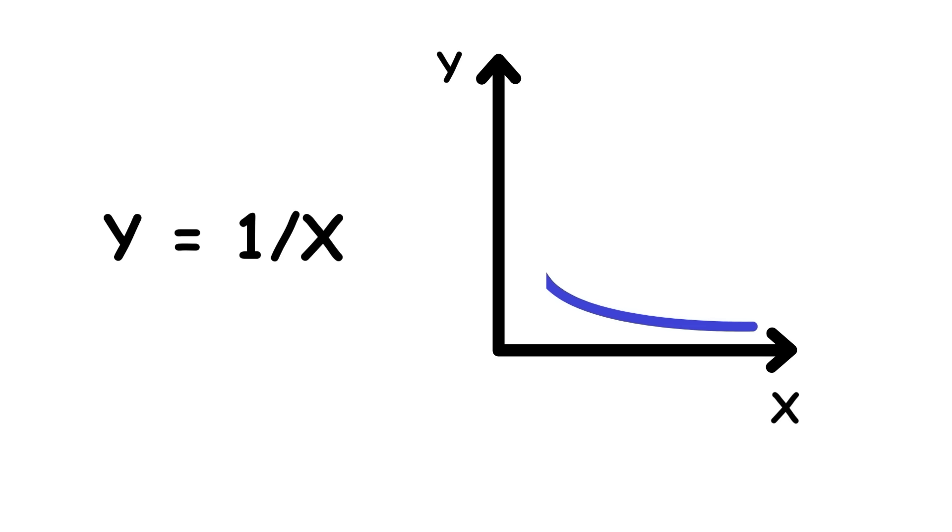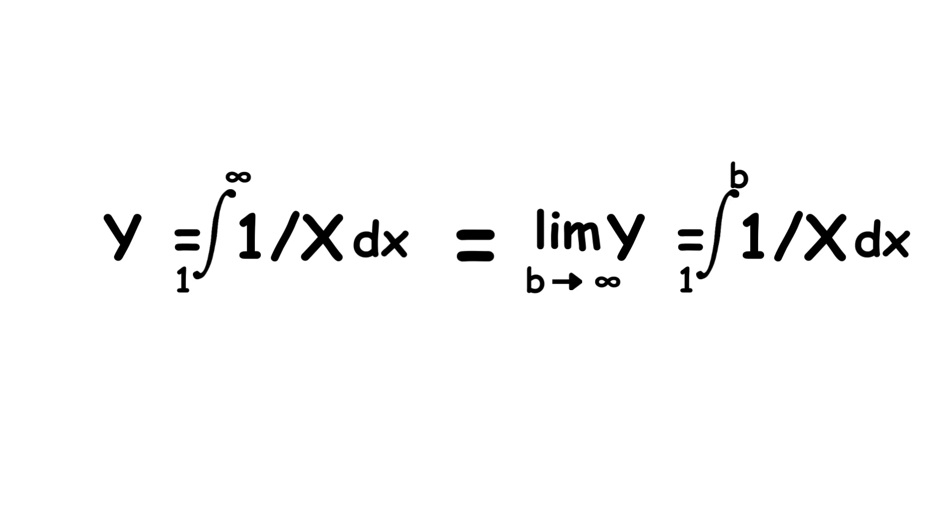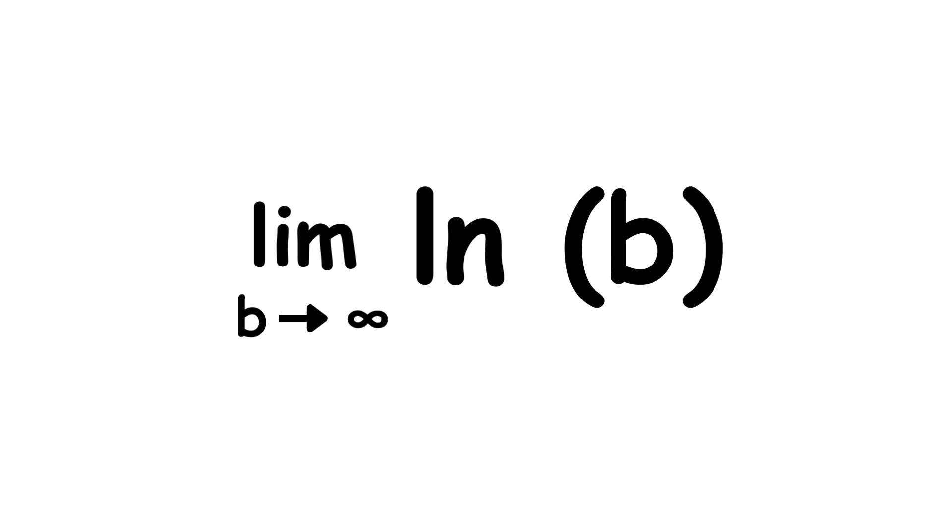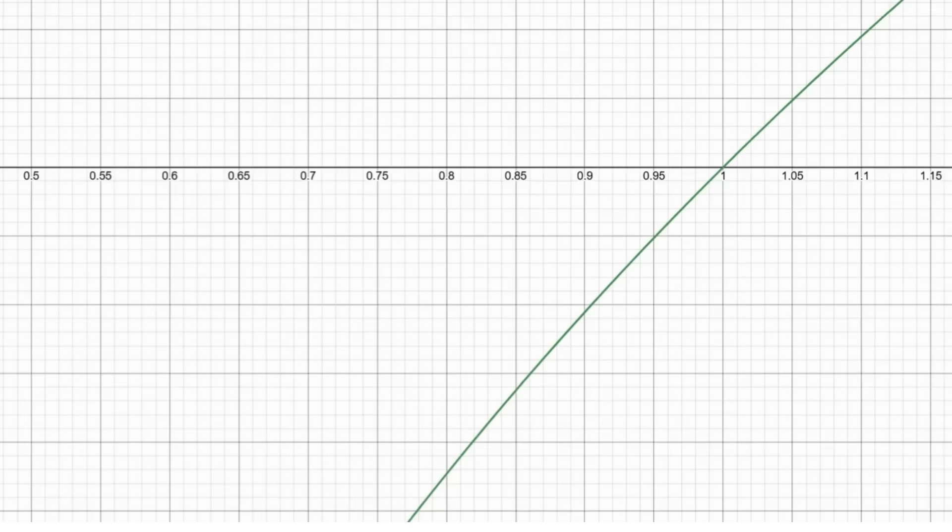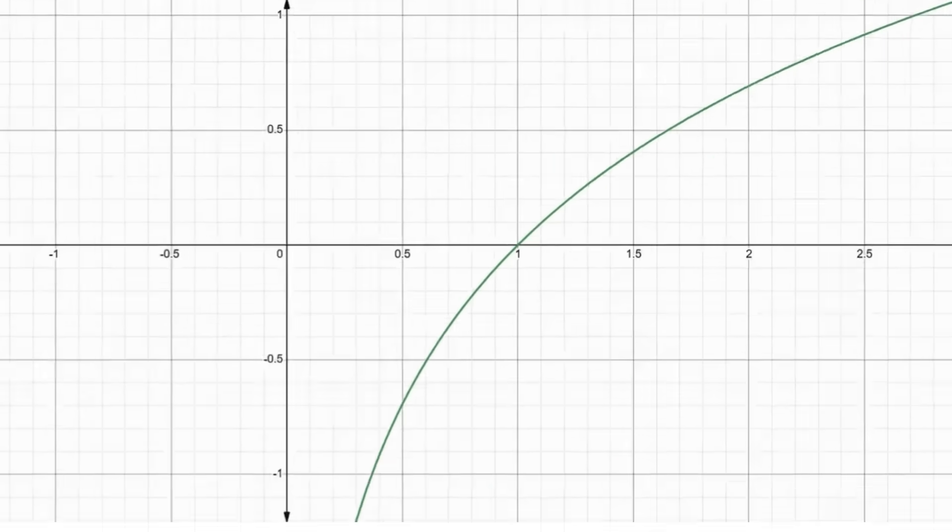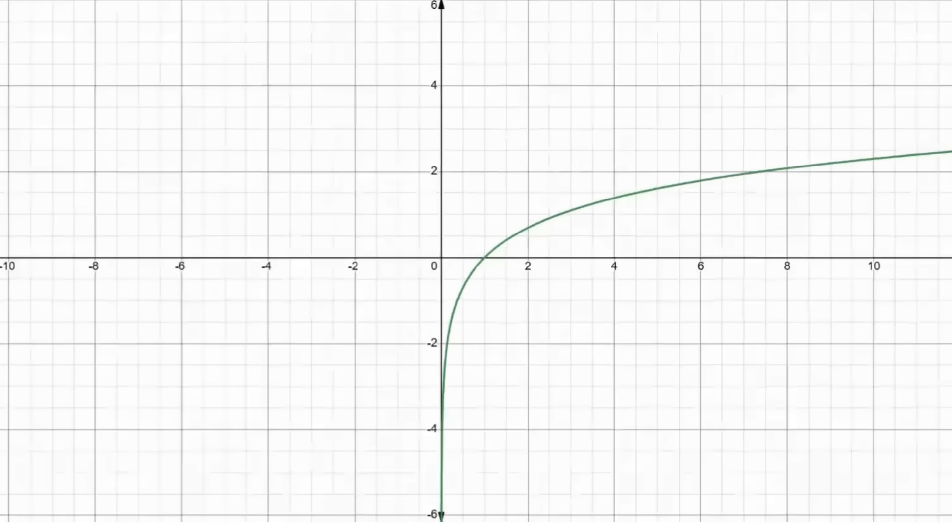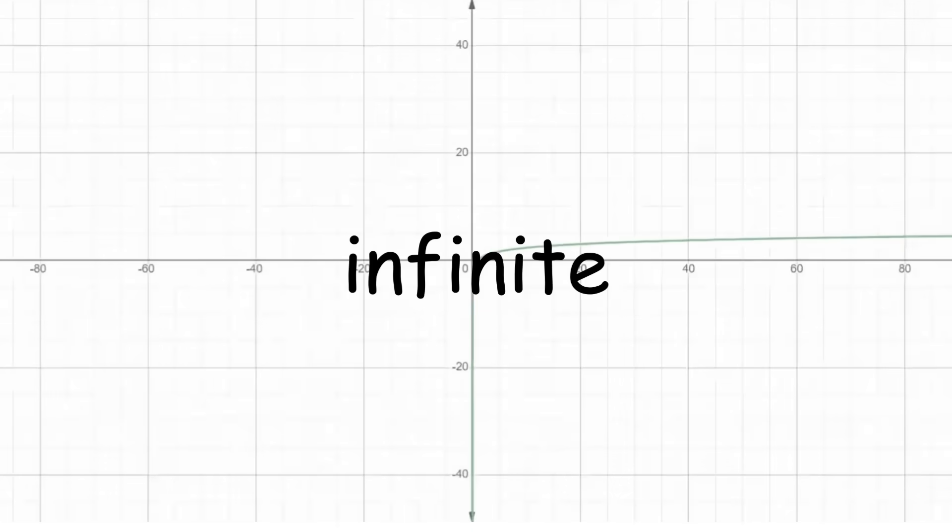But what if we just find the area under the curve y equals 1 over x, for x from 1 to infinity? This is the same as this, which becomes this. As b grows bigger and bigger, the natural logarithm of b also grows bigger and bigger without bound, so the area under the curve is actually infinite.